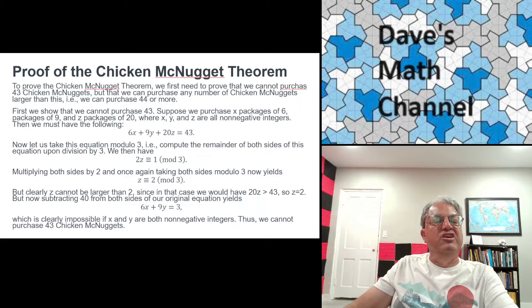So let's just suppose that we can, first you have to prove that you can't purchase 43. If you could, then there'd have to be negative integers X, Y, and Z, such as 6X plus 9Y plus 20Z equals 43, because that's the total number of McNuggets you're purchasing. You're purchasing X size 6 packs, Y size 9 packs, and Z size 20 packs. That has to add up to 43.